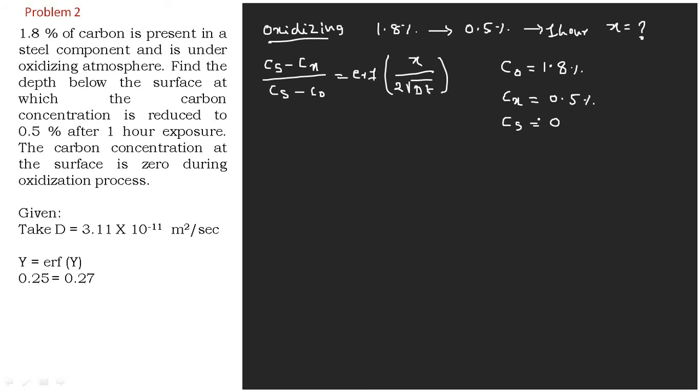Let us try to substitute the values and find the value of X. This is nothing but (0 - 0.5)/(0 - 1.8), which is equal to erf(X/(2√(3.11 × 10^-11 × t))).